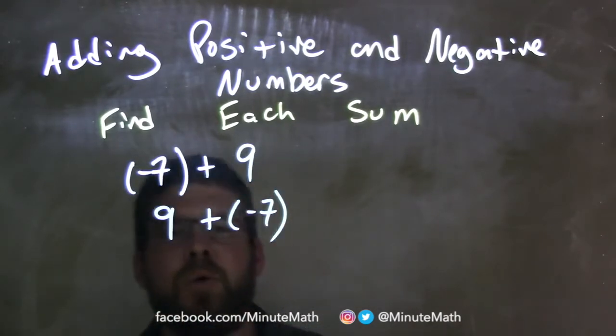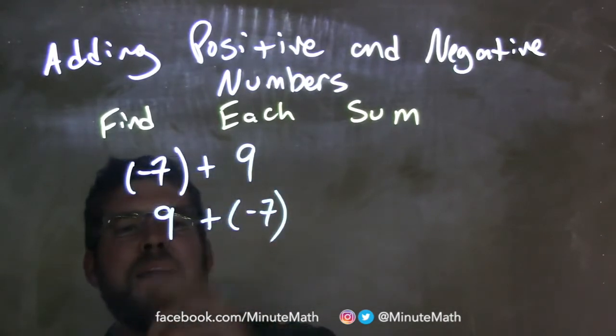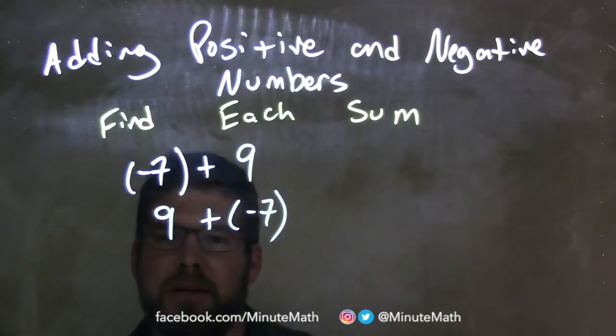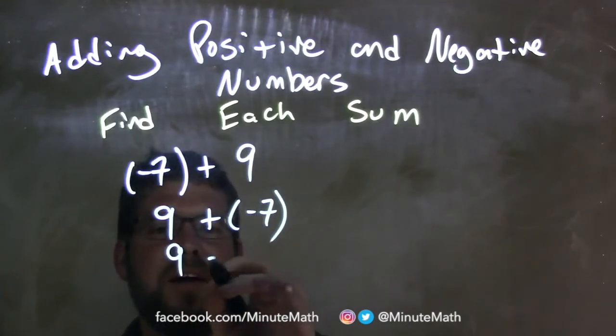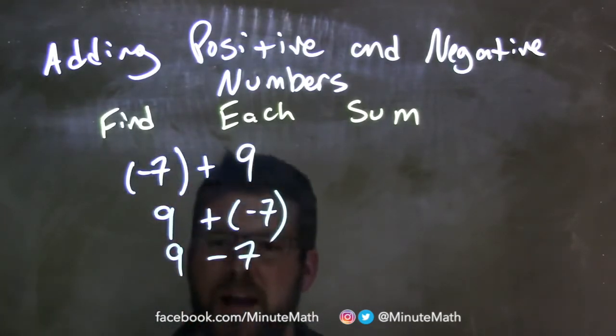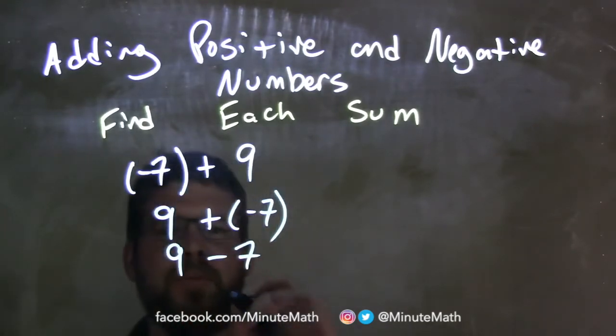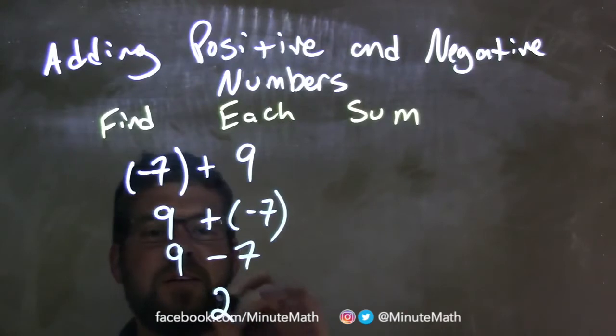From there, adding a negative is the same thing as subtraction. So 9 plus a negative 7 is 9 minus 7. And 9 minus 7 comes out to just be 2.